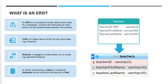Each entity will have various attributes — categories of information about that entity. For example, for teachers, you can see there's a teacher ID, which in a lot of schools is initials — three initials — and their first name and their last name.